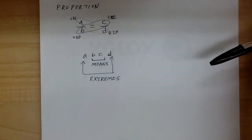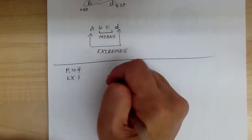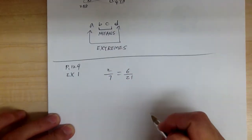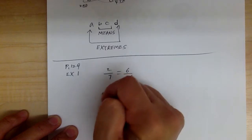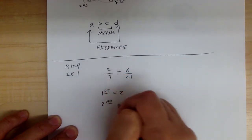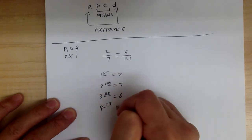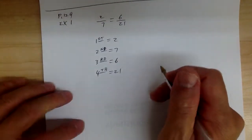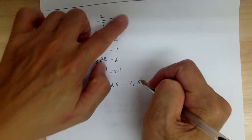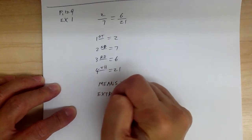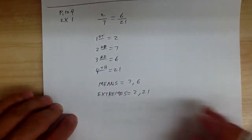Let's go to example one. You have 2 over 7 is equal to 6 over 21. They want you to identify the terms and the means and the extremes. So the first term is 2, the second term is 7, the third term is 6, and the fourth term is 21. The means are the ones in the middle: 7 and 6. And the extremes are 2 and 21. Just be familiar with all the terminology.